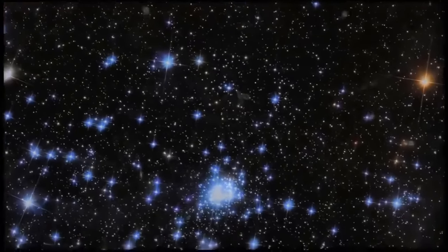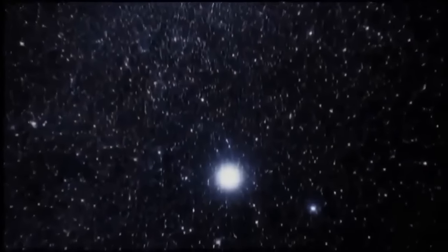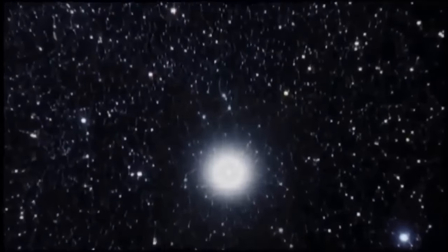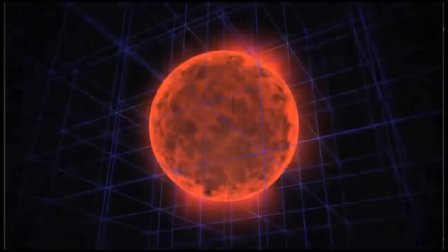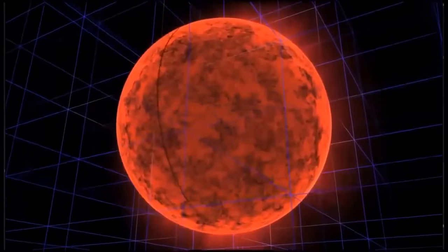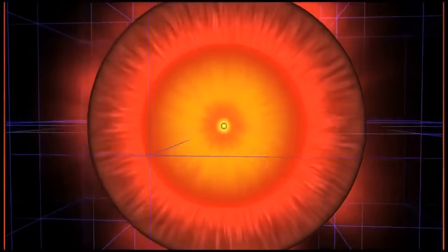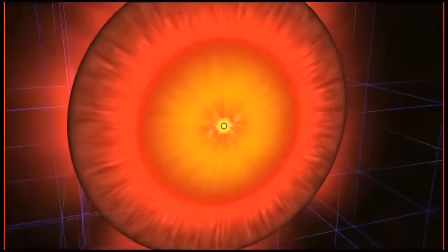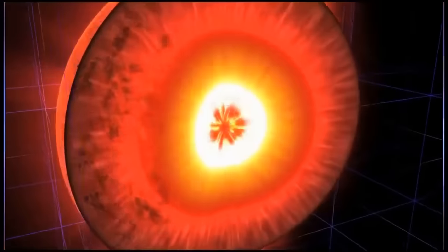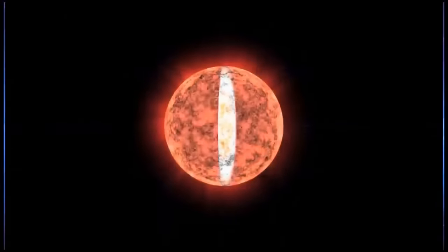As a giant star ages, heavy elements like iron gradually build up in its core. As its gravity grows more intense, the star begins to shrink until it reaches a critical threshold. Its core literally collapses in on itself. That causes the star to explode in a supernova. And now, in death, the star can unleash gravity's true fury.